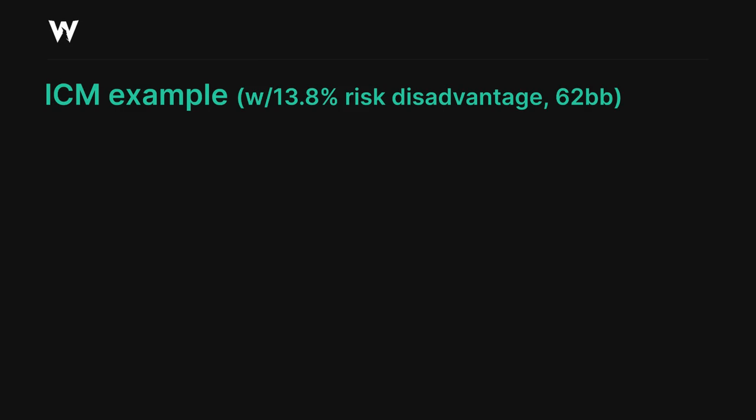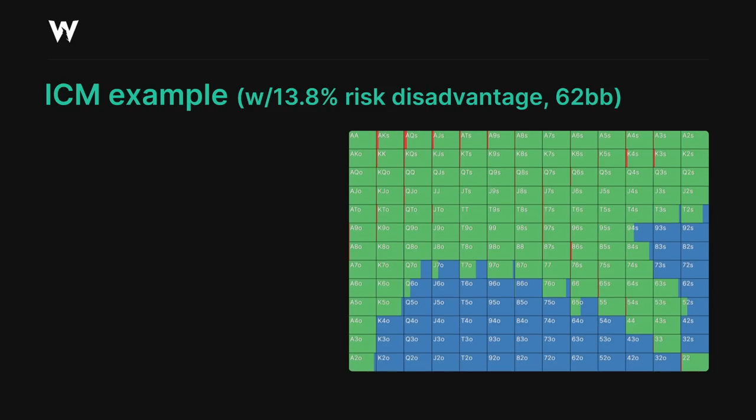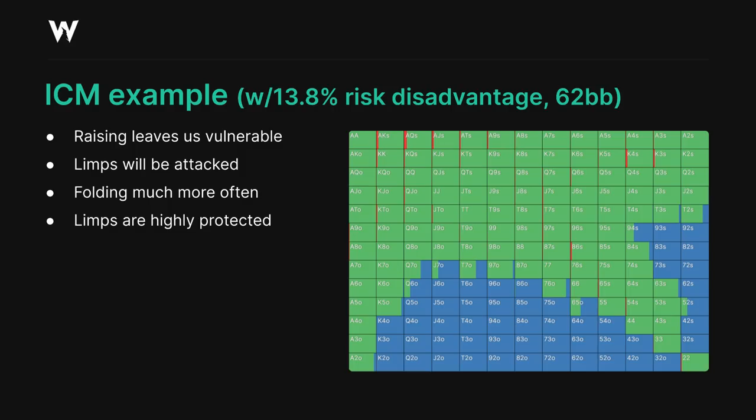By contrast, take a look at this next spot where the small blind has a significant risk disadvantage, this time at 62 big blinds effective, with the big blind being the chip leader at a final table and having a 13.8% risk advantage over the small blind. In this case, the small blind is forced to fold a lot more often, even beginning to muck some suited hands for fear of the big blind's aggression.